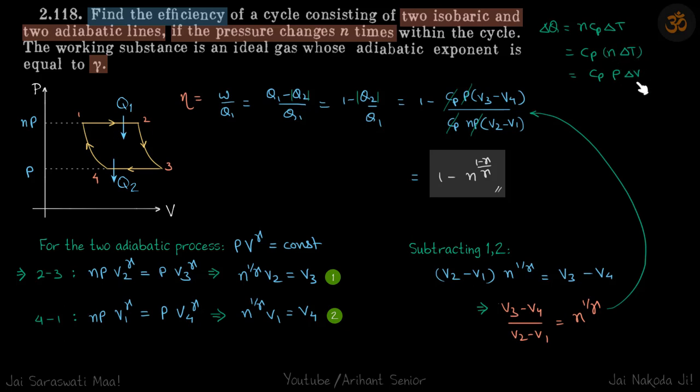Now Q2 we can write as Cp into P into change in volume, so that is V3 minus V4. Cp into P into V3 minus V4. And Q1 for this part will be Cp into nP into V2 minus V1. Cp into nP into V2 minus V1.